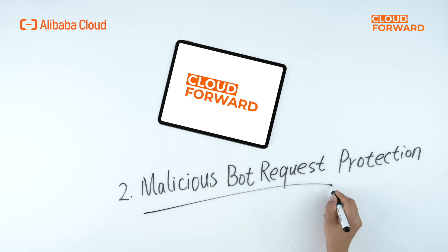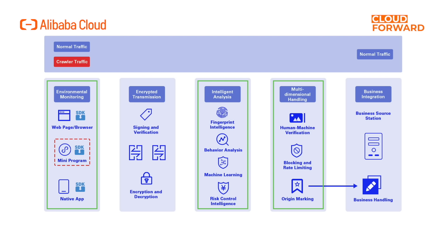Two: malicious bot request protection. Depending on different client environments — web or APP — through end environment detection, it can distinguish between normal human requests and bot requests. On the network side, it identifies abnormal request behavior by learning the pattern of URL path access.